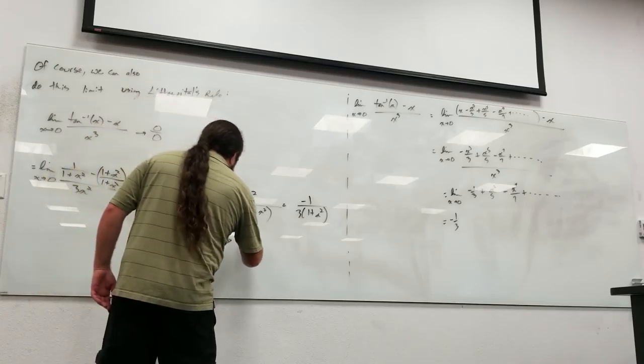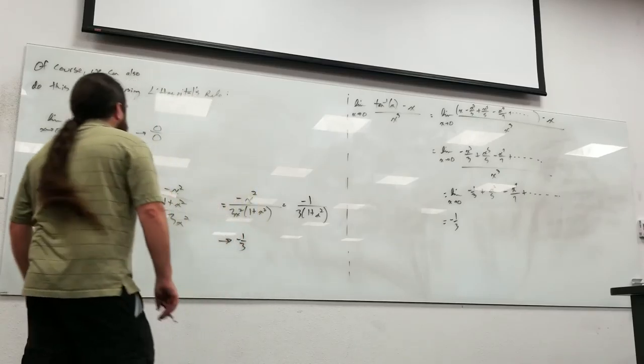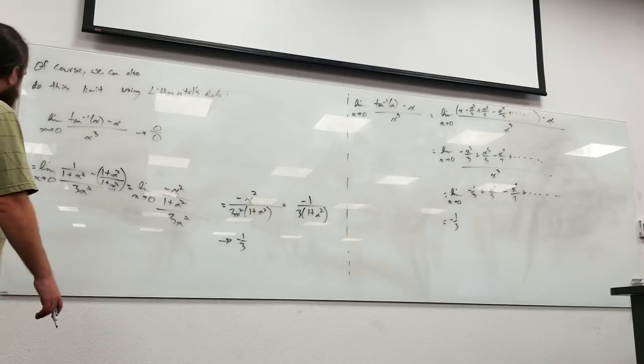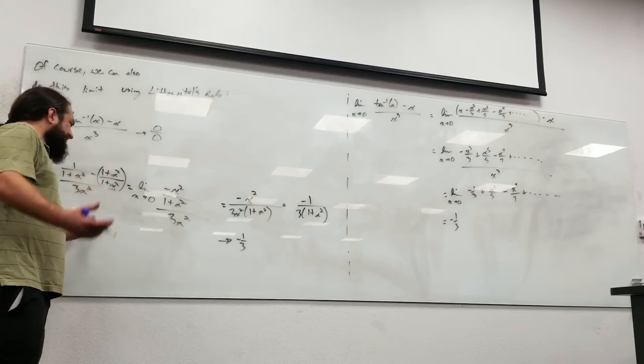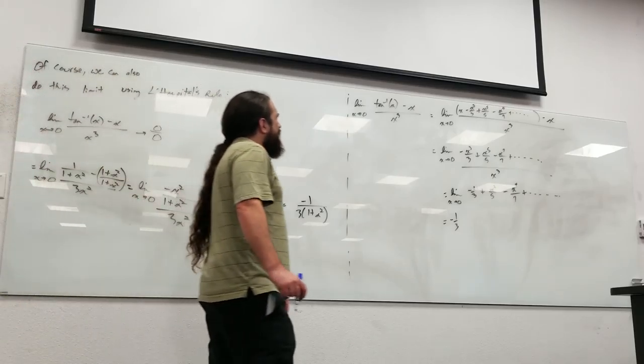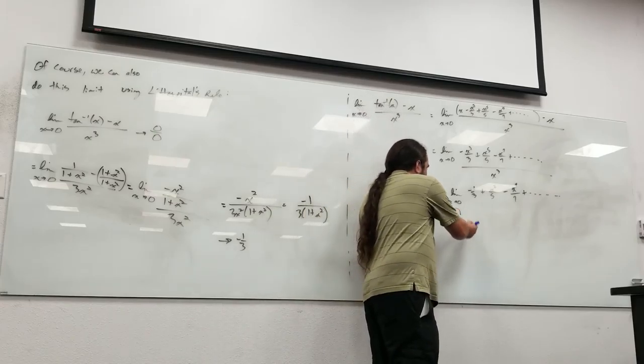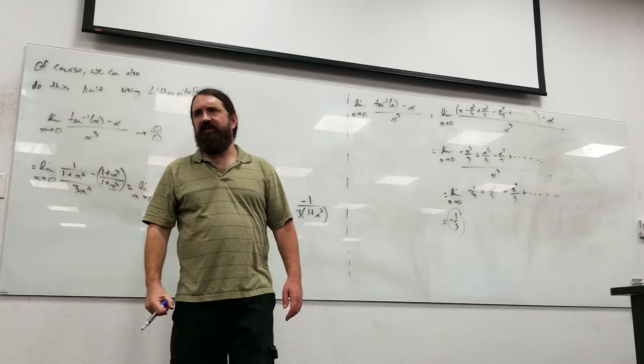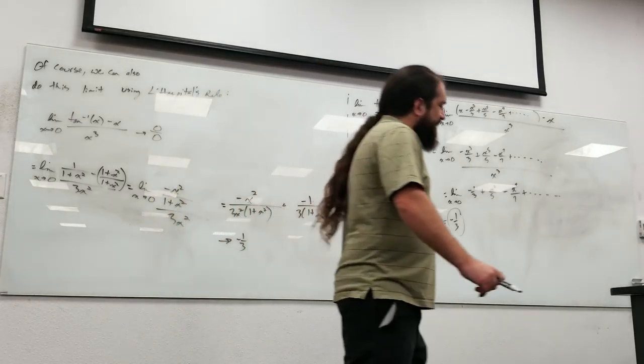So this definitely goes to negative one third. I don't know that either way was particularly harder than the other. If you happen to know the series, that result falls out really nice. To me, I can compute this via L'Hôpital's and I can make the numbers work. I feel like I have a better understanding of where the one third comes from in this one just because it comes out of a coefficient in the series of the inverse tangent. So, whichever way you prefer.